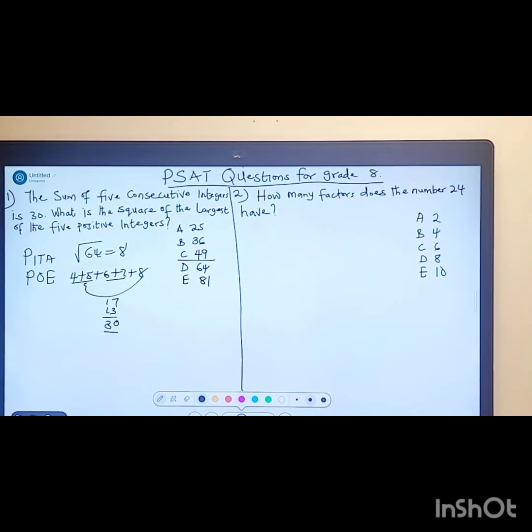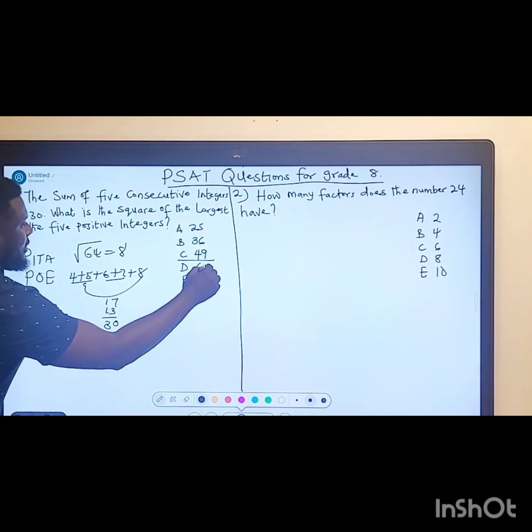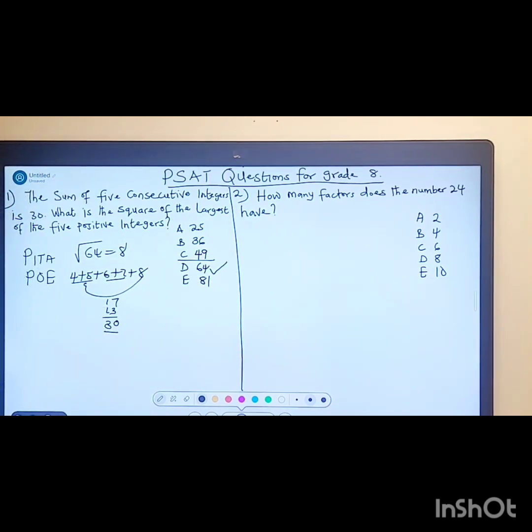So that means what we are looking for, our answer is D. Now let's go to question 2: How many factors does the number 24 have?